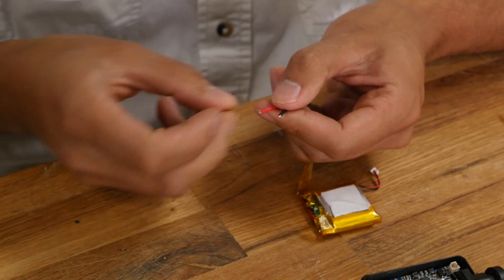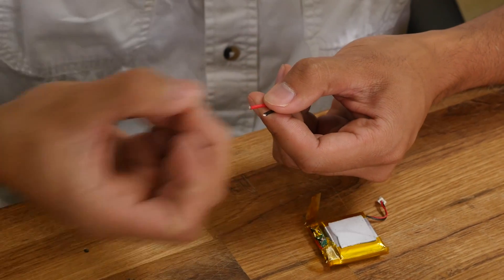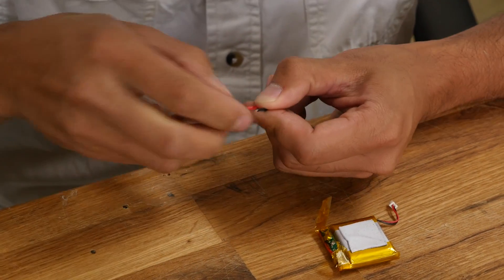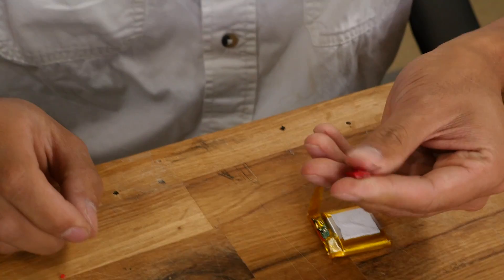A neat thing about silicone wire: if you grab it and pinch it with your fingernail and rip it, you can strip it. It's an easy way to strip this without pulling any strands of wire out.